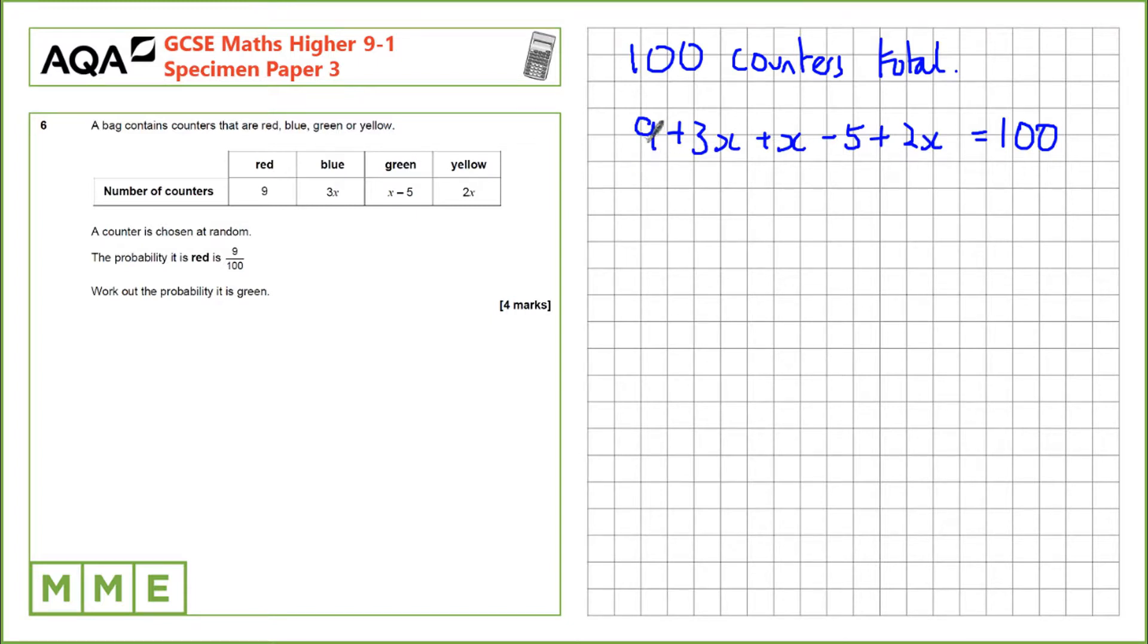Let's collect up terms here. 9 take away 5 that's 4, and 3x plus x plus 2x is 6x, and that equals 100.